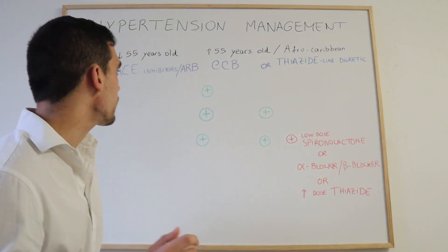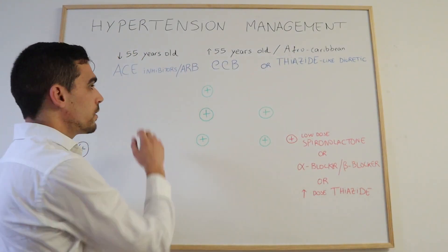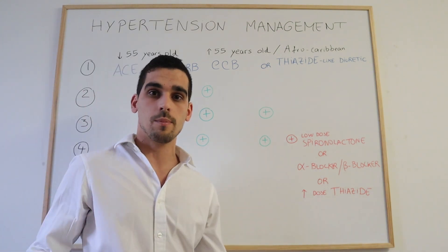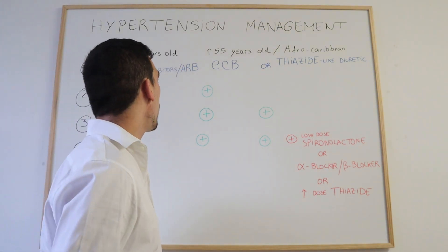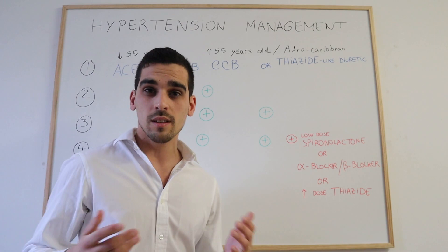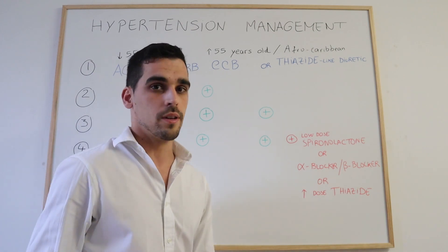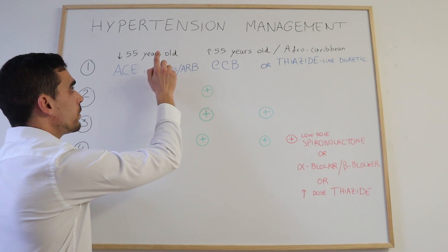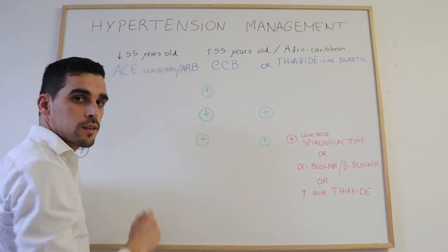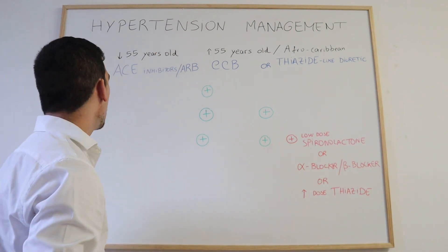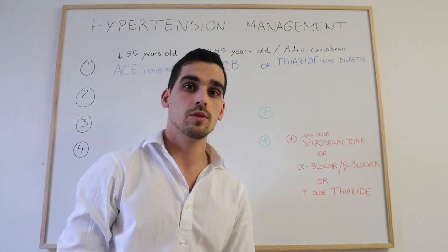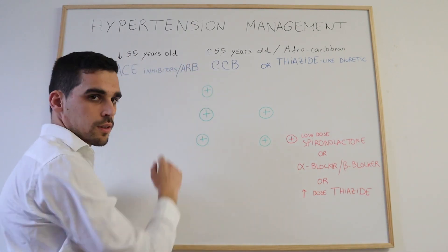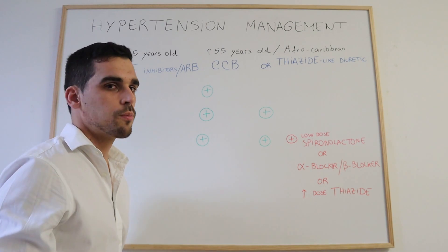The first stage, when a patient is first diagnosed with hypertension, is highly dependent on the age of the patient. If the patient is younger than 55 years old, the first drug choice will be an ACE inhibitor, for example perindopril.